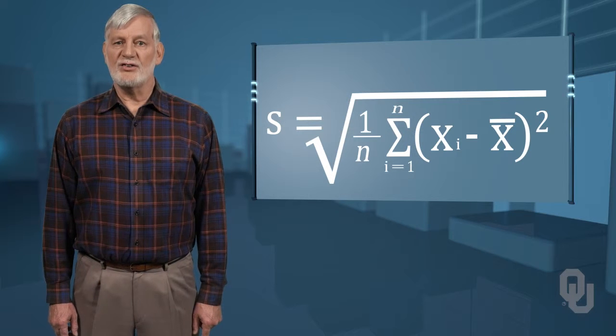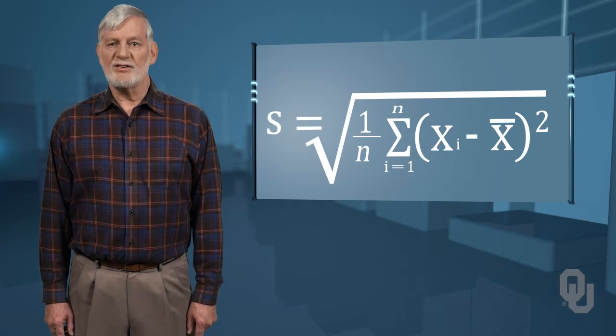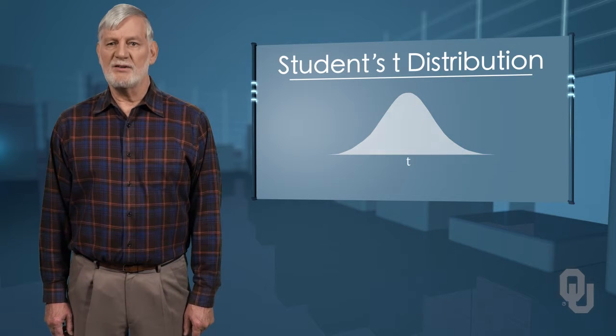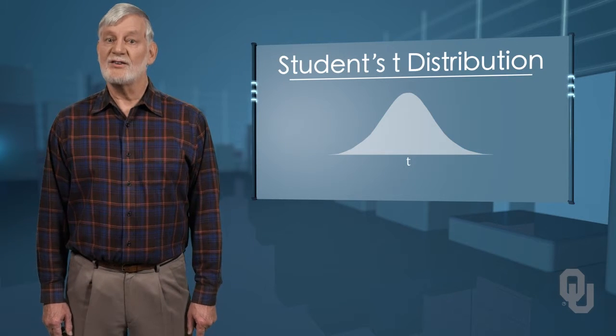The answer is the student's t-distribution, invented for just this case. The student's t-distribution has one of the most desirable properties of the normal distribution. It is symmetrical.